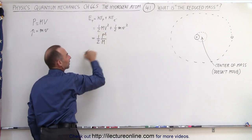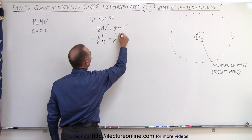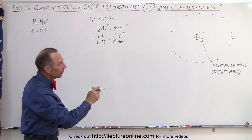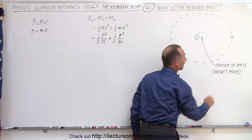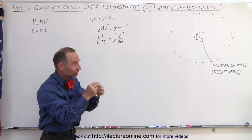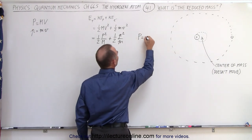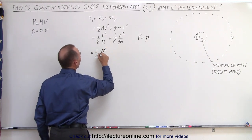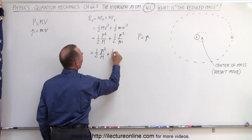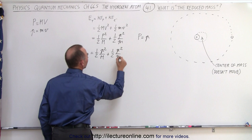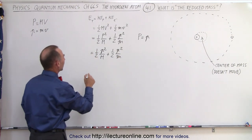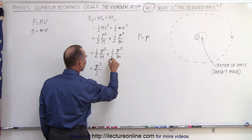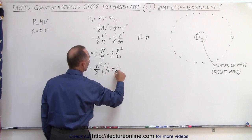We can write the kinetic energy as one half p squared divided by m. Notice we only have one m instead of m squared, so we have to compensate for that, plus one half little p squared divided by little m. Now because of conservation of momentum, we know that the momentum of the proton must equal the momentum of the electron — otherwise the center of mass can't stay at the same location. So big P must equal little p. We replace big P by little p and factor out the one half and p squared, giving us p squared divided by 2.